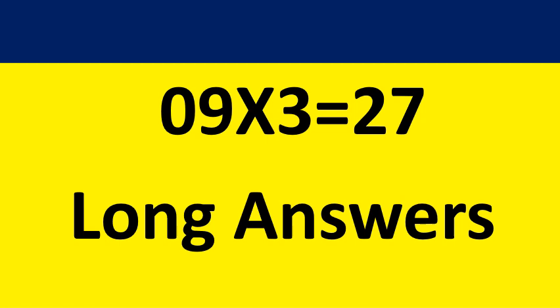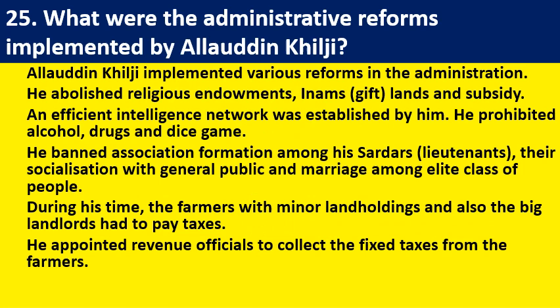Now we shall go to three-mark questions. Three marks questions are nine in number with options. What were the administrative reforms implemented by Alauddin Khilji? Students need to write a minimum of six points to score three out of three.